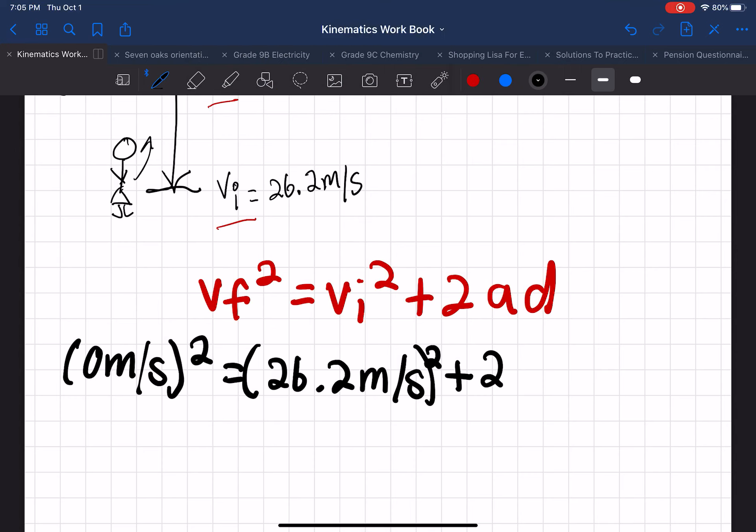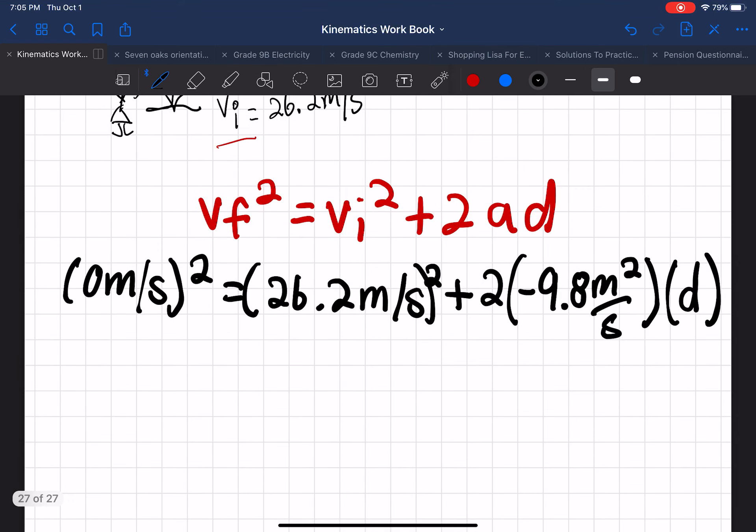And we're going to be multiplying against negative 9.8 meters per second squared. And then we're looking for d, which is also multiplied here. Don't forget the minus sign in the 9.8. That's very important. And now we're going to continue through our calculations.